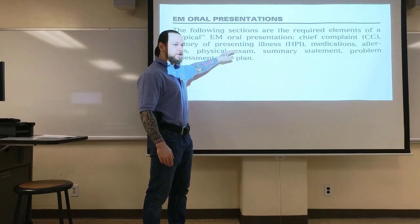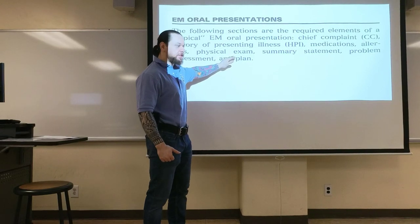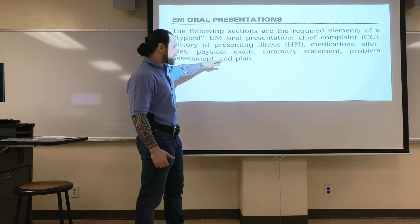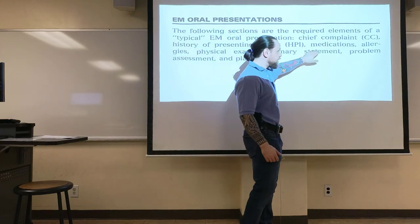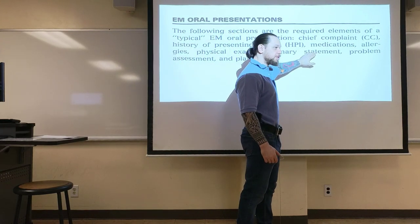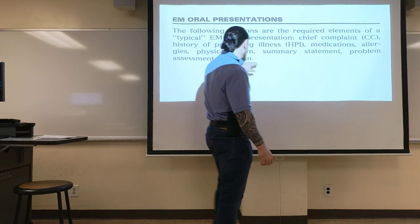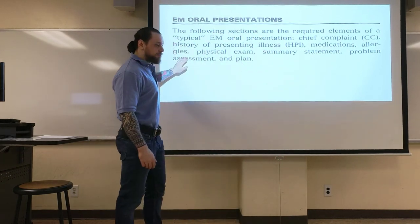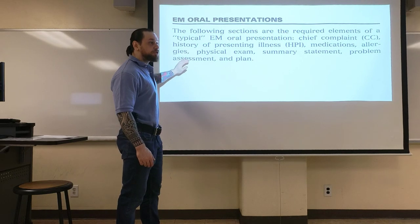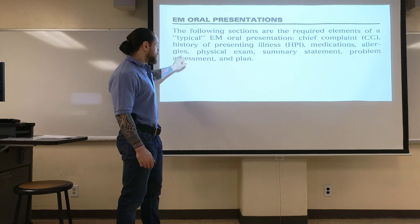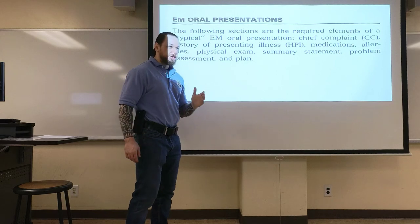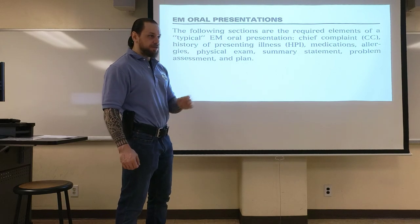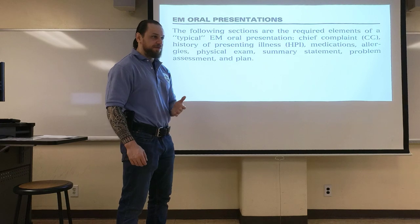Then you get the history pertinent to the chief complaint. For chest pain, you want diabetes, hypertension, past stents, CABG — things like that. Next is medications — and this is not the medications you gave, but all the medicines the patient is prescribed. Write those down. Any allergies the patient has — more particularly, allergies to medicines, not foods. Ask about all their allergies.